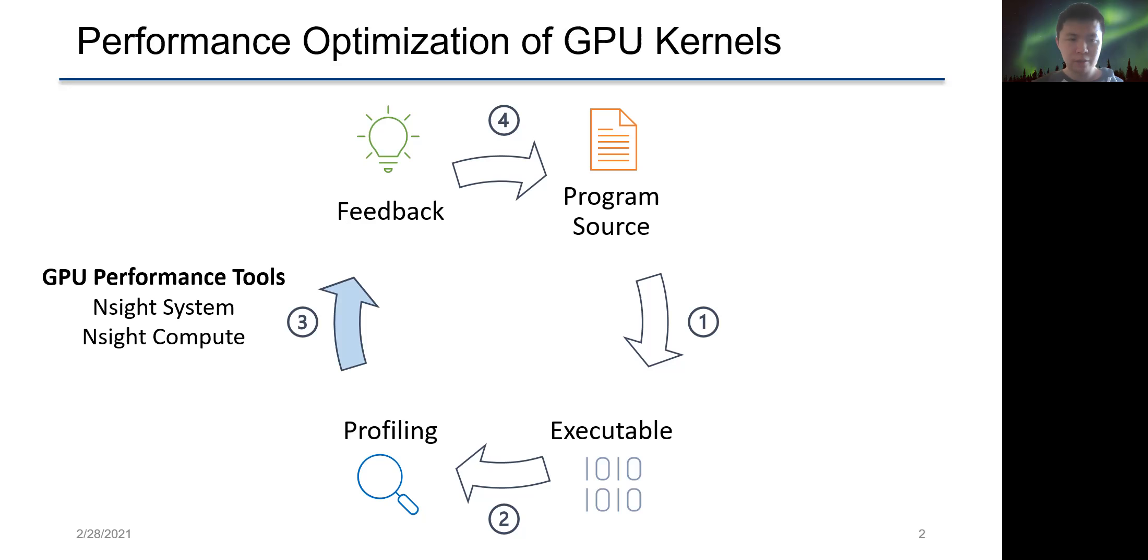Existing tools such as Nsight Systems and Nsight Compute only provide us very shallow insights because they don't provide information about which lines you can change in your source code to gain speedup or what optimizations are effective for a program.